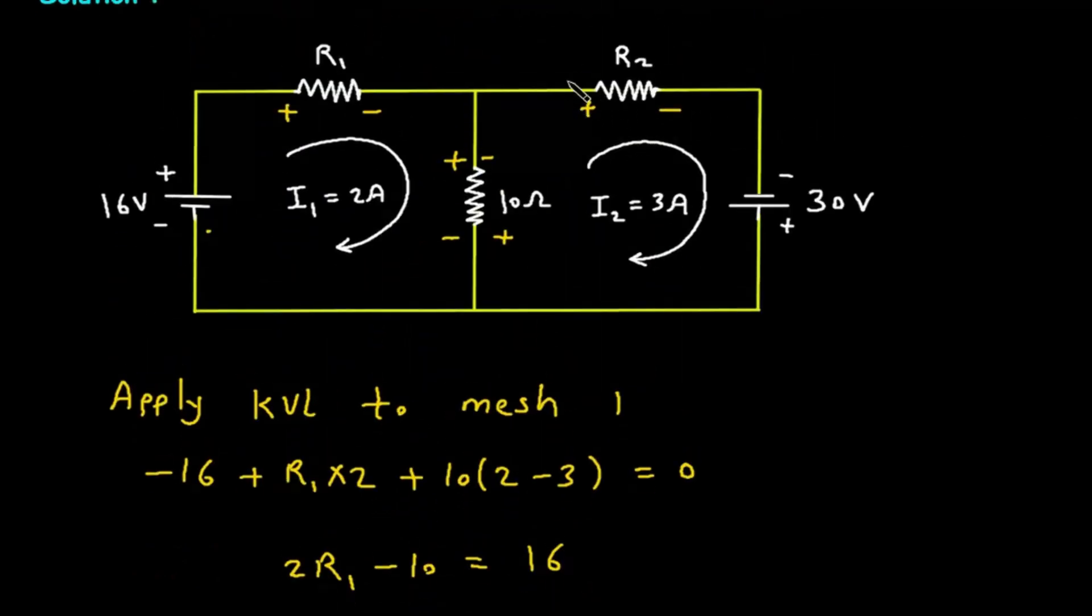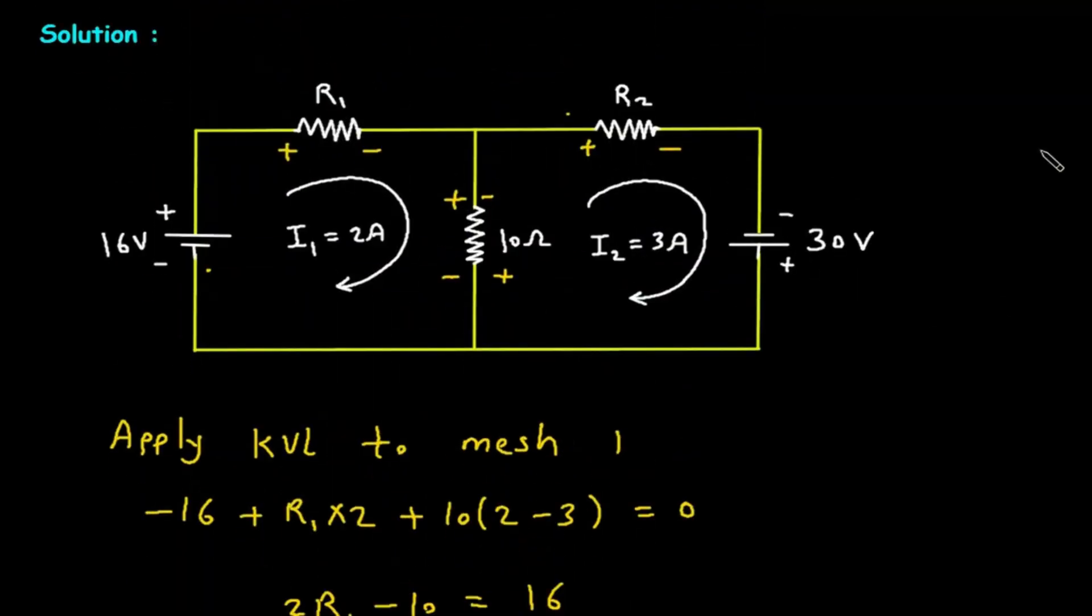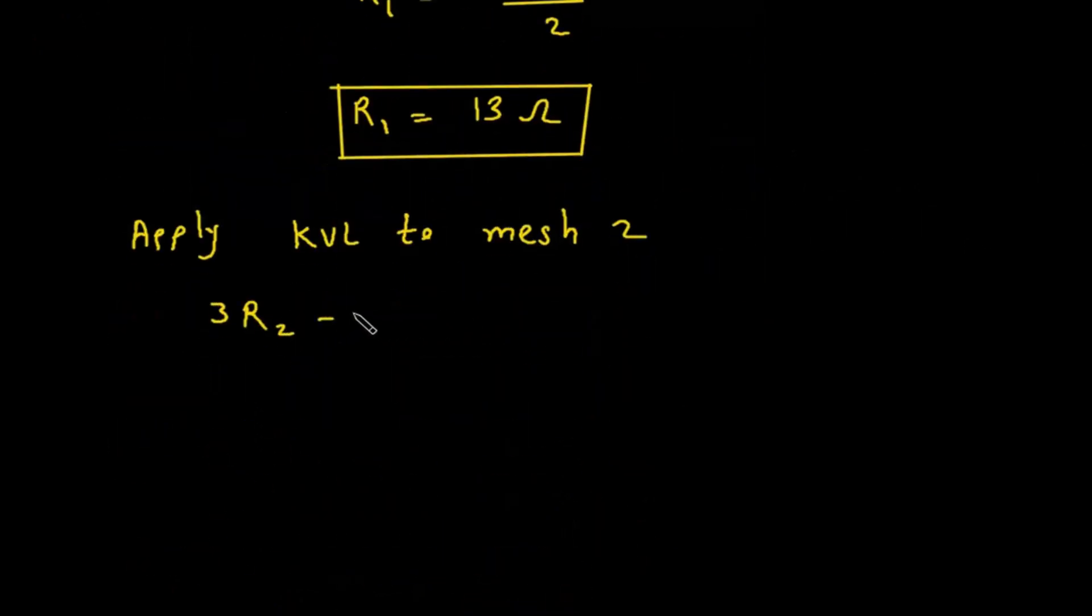Let's say we will start from here. So this will be plus R2 into I2. That is R2 into 3. 3R2. Then minus 30. Minus 30.